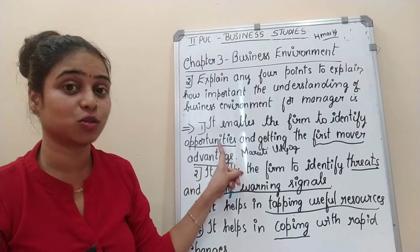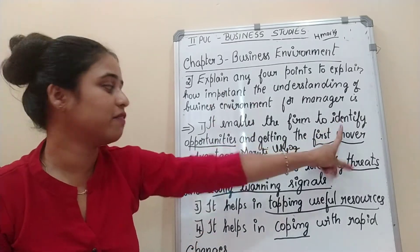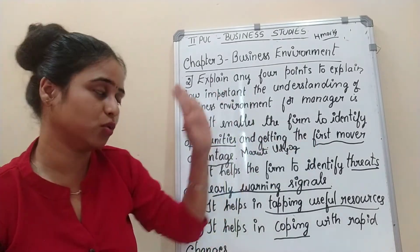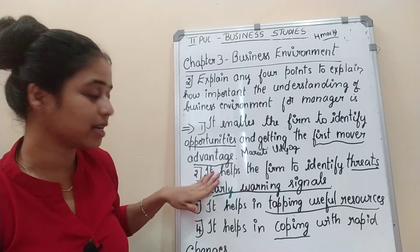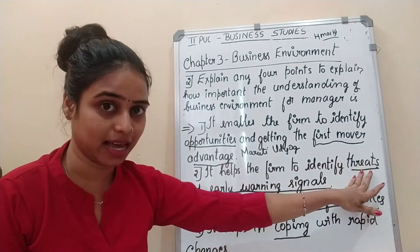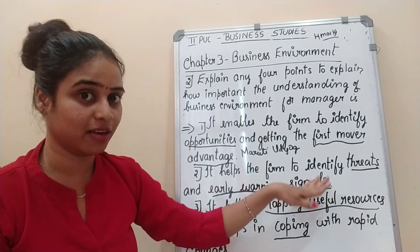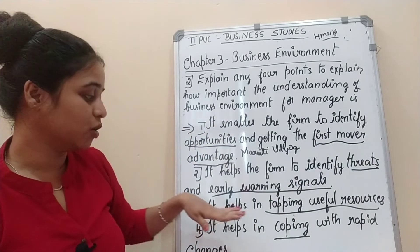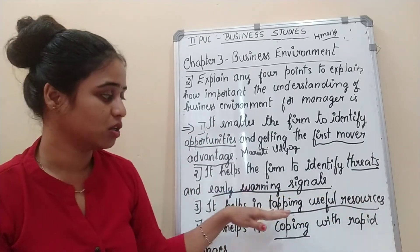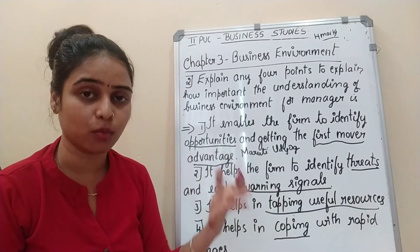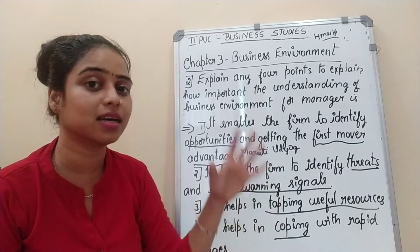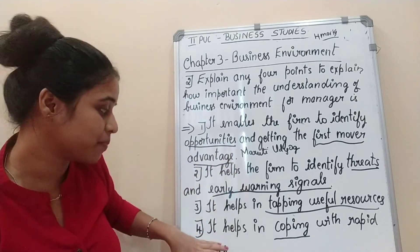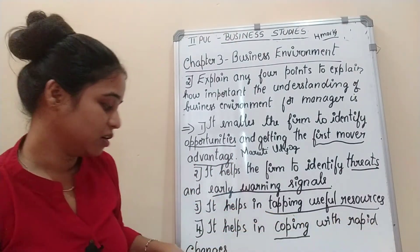Let's quickly revise. First point: it enables the firm to identify the opportunities and getting the first mover advantage — example: Maruti Udyog small car sales, they are the leader. Second: it helps the firm to identify the threats and early warning signals — example: Indian company facing foreign competition. Third: it helps in tapping useful resources — machinery, labour, power, water, transport system, road, land. Fourth: it helps in coping with the rapid changes — technology changes and market conditions are very turbulent.